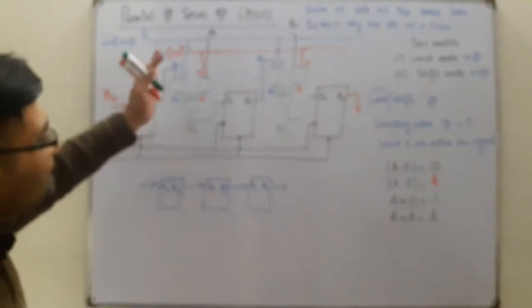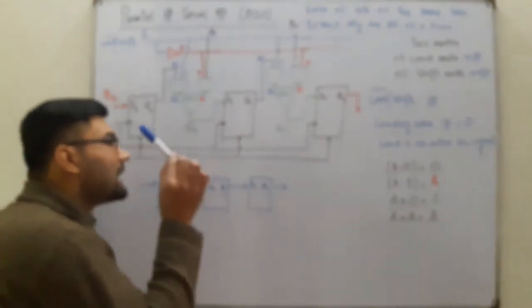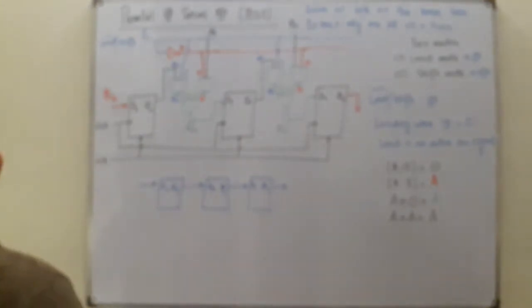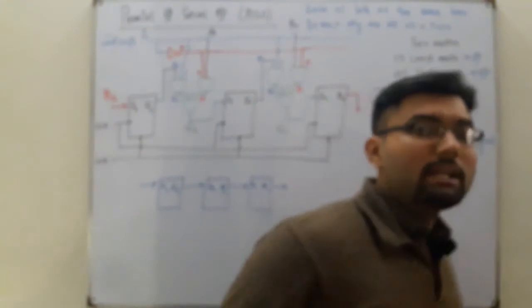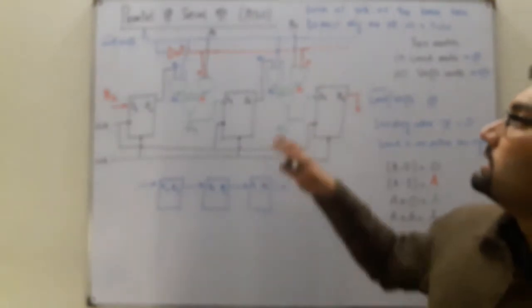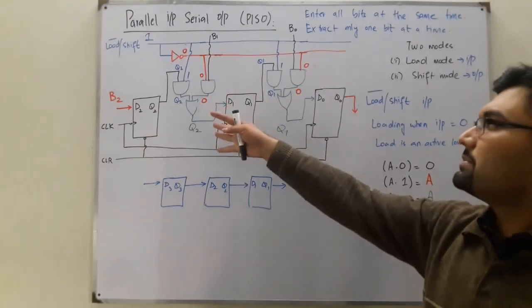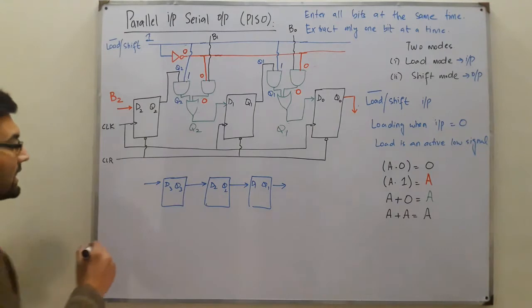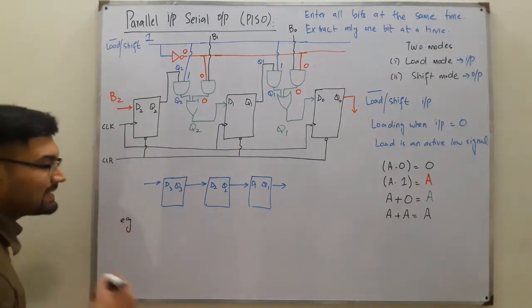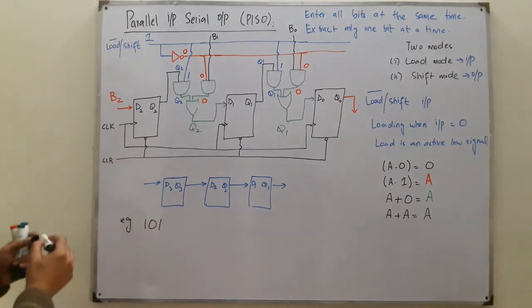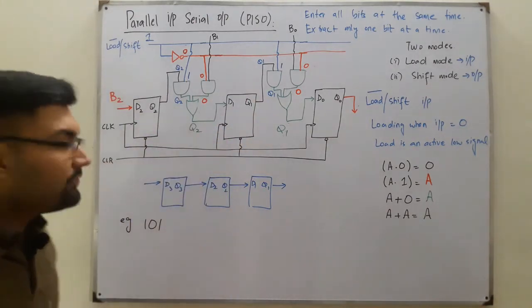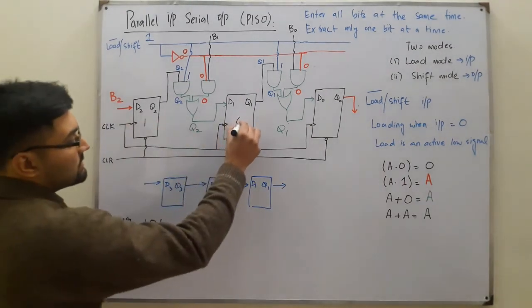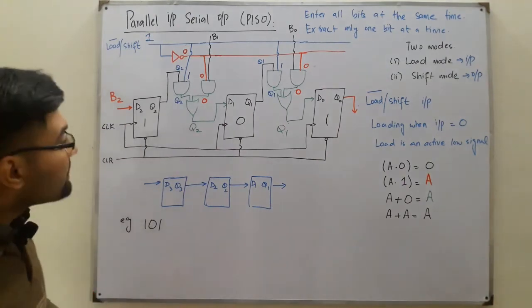In shift mode, this circuit directly becomes the serial input serial output register. The serial output is obtained by shifting right. For more detail on the serial output refer to the previous video on serial input serial output. Now let's say we want to store the 3-bit number 1-0-1. One, zero, one is entered into the flip-flops directly.